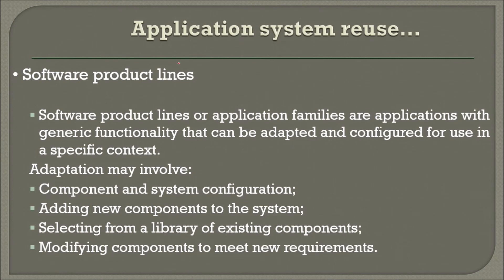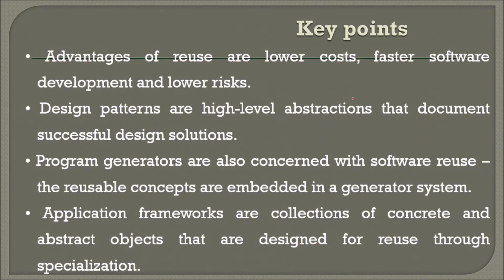Software product lines, or application families, are applications with generic functionality that can be adapted and configured for use in a specific context. Adaptation involves component and system configuration, adding new components to the system, selecting from a library of existing components, and modifying components to meet new requirements. Key advantages of reuse are lower cost, faster software development, and lower risk. Design patterns are high-level abstractions that document successful design solutions, and program generators are also concerned with software reuse.